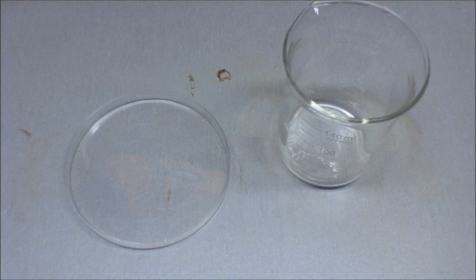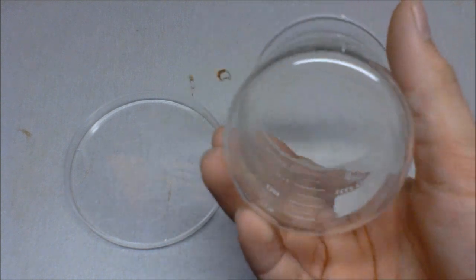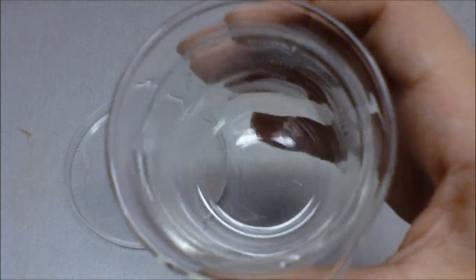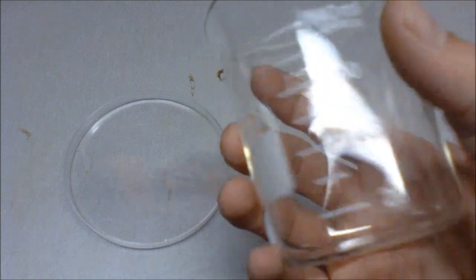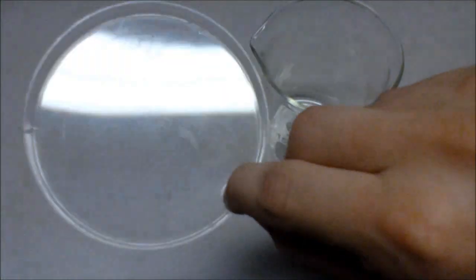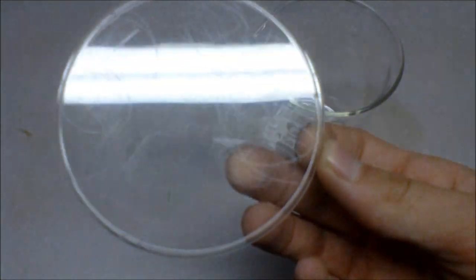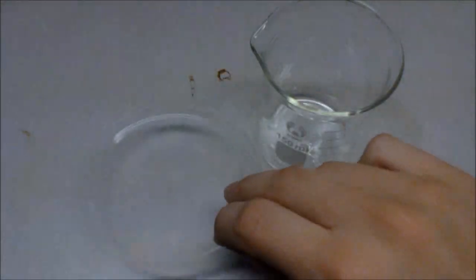These are both of the items after being thoroughly washed. Here is the beaker. You can see it is in near perfect condition with no evidence left of iron stains on it. And the petri dish is similar. You cannot see any rust stains or anything on it.